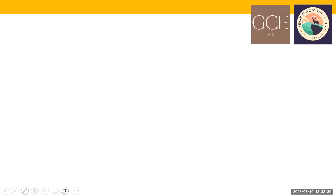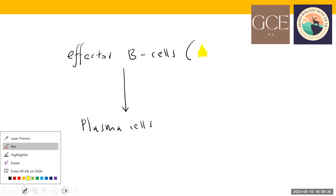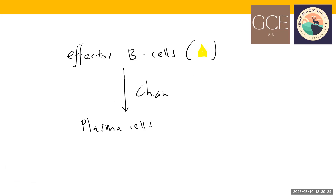After proliferation, the effector B-cells increase in number and they can further change and differentiate into something called plasma cells. So B-cells change to plasma cells. First B-cells activate, then B-cells proliferate for a specific antigen, and then those antigen-specific B-cells differentiate into plasma cells.